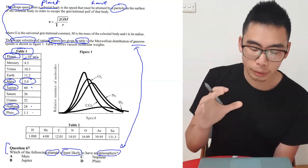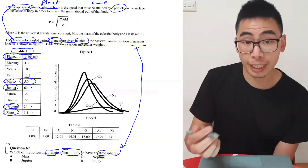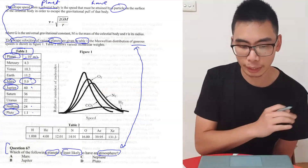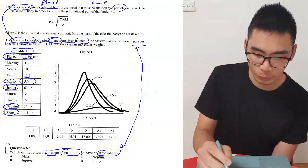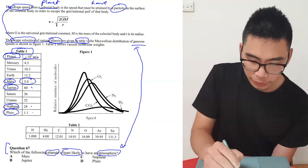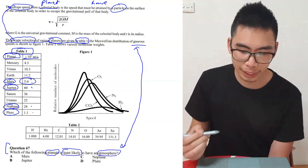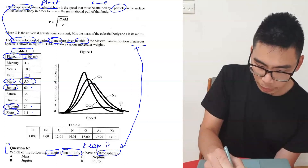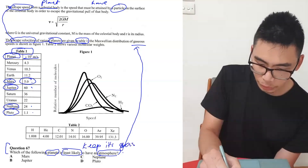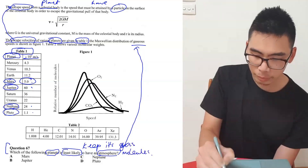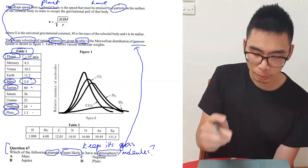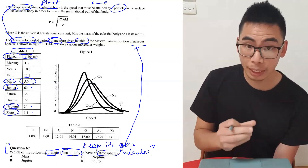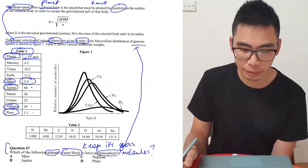This is another ACER skill: being able to evaluate and follow a line of reasoning. Now we know the question is essentially asking: 'Which of the following planets is least likely to keep its gas molecules?' That's another way you can rephrase it, and rephrasing in this way makes the path to the answer much clearer.